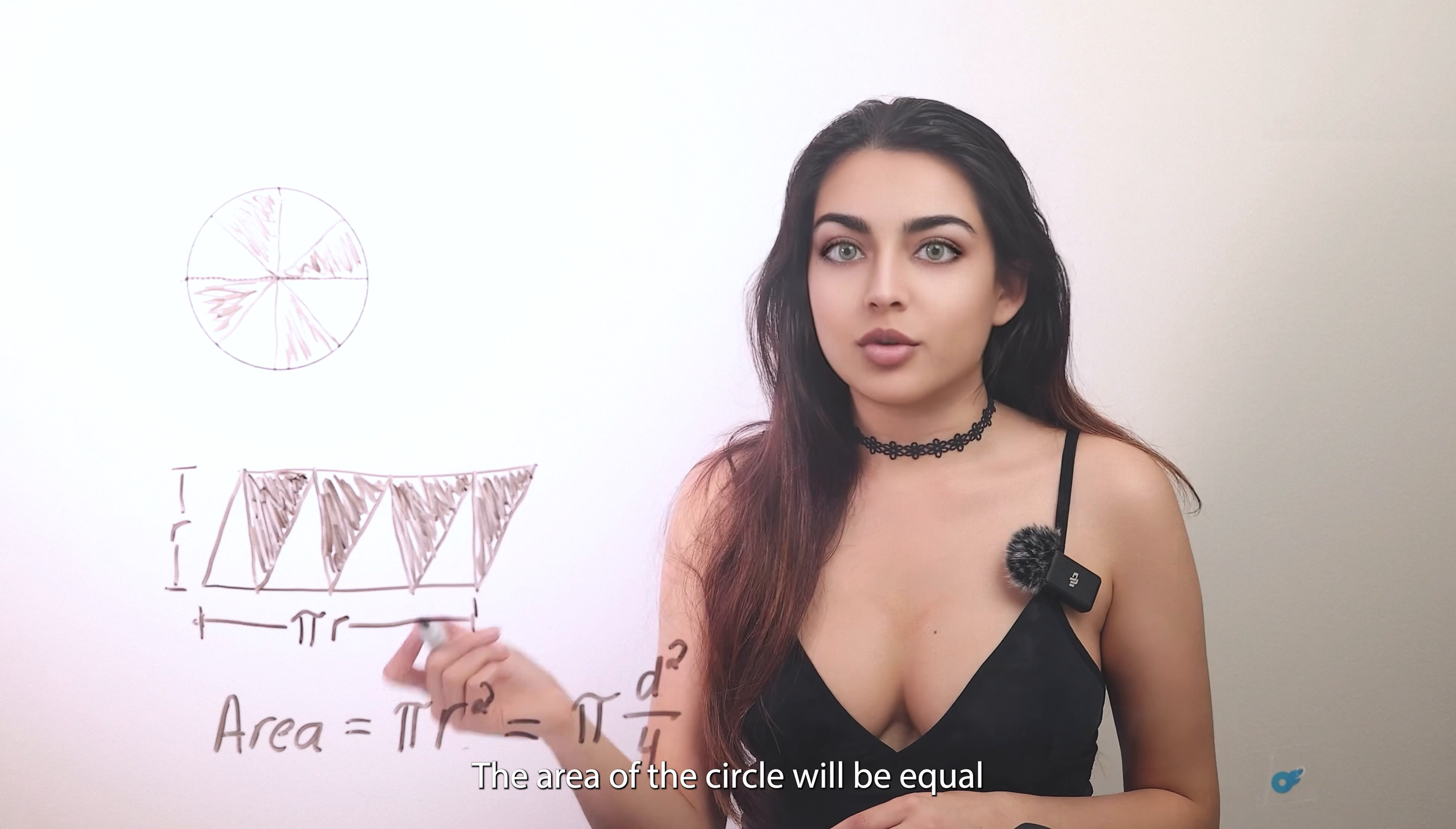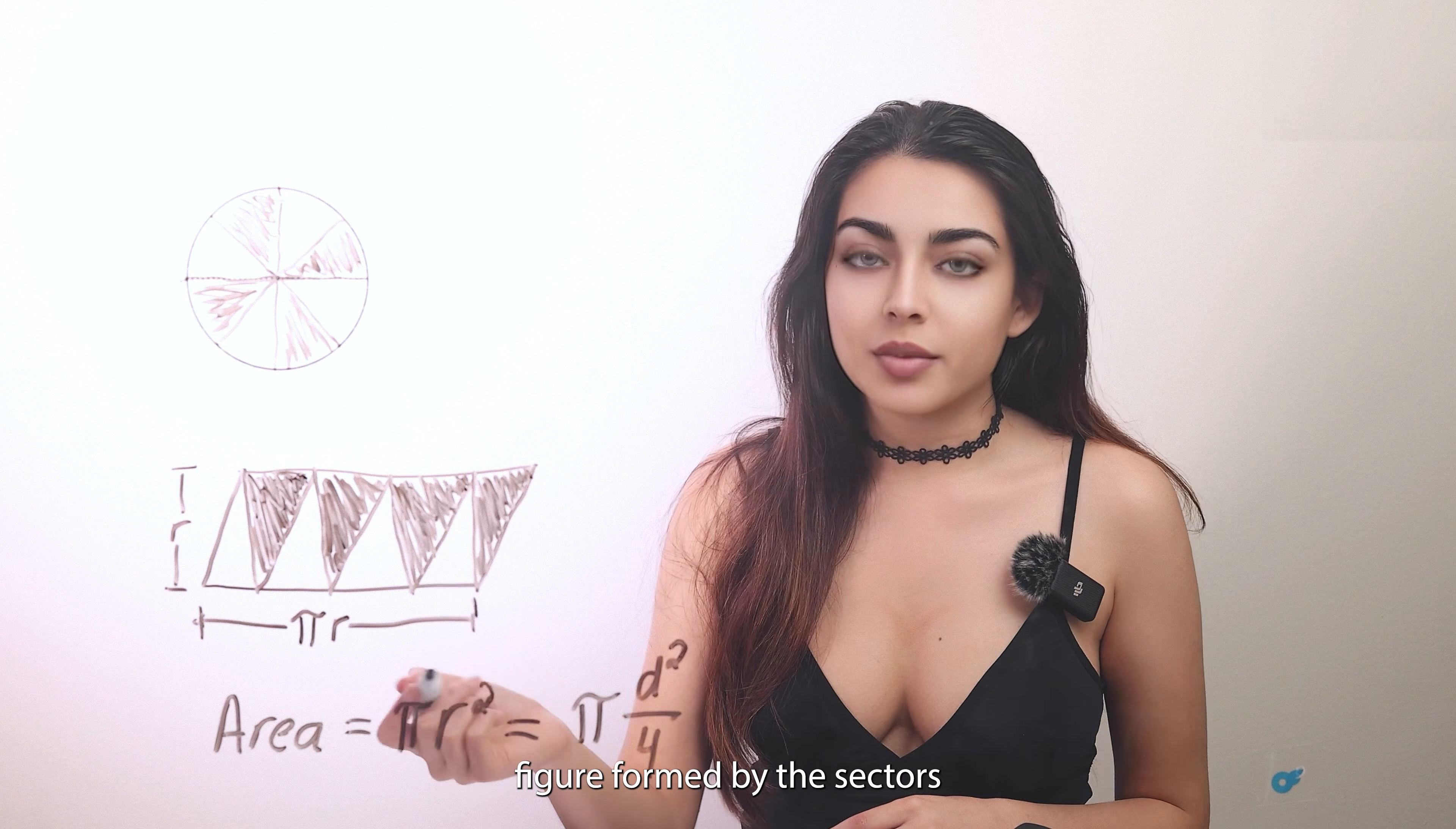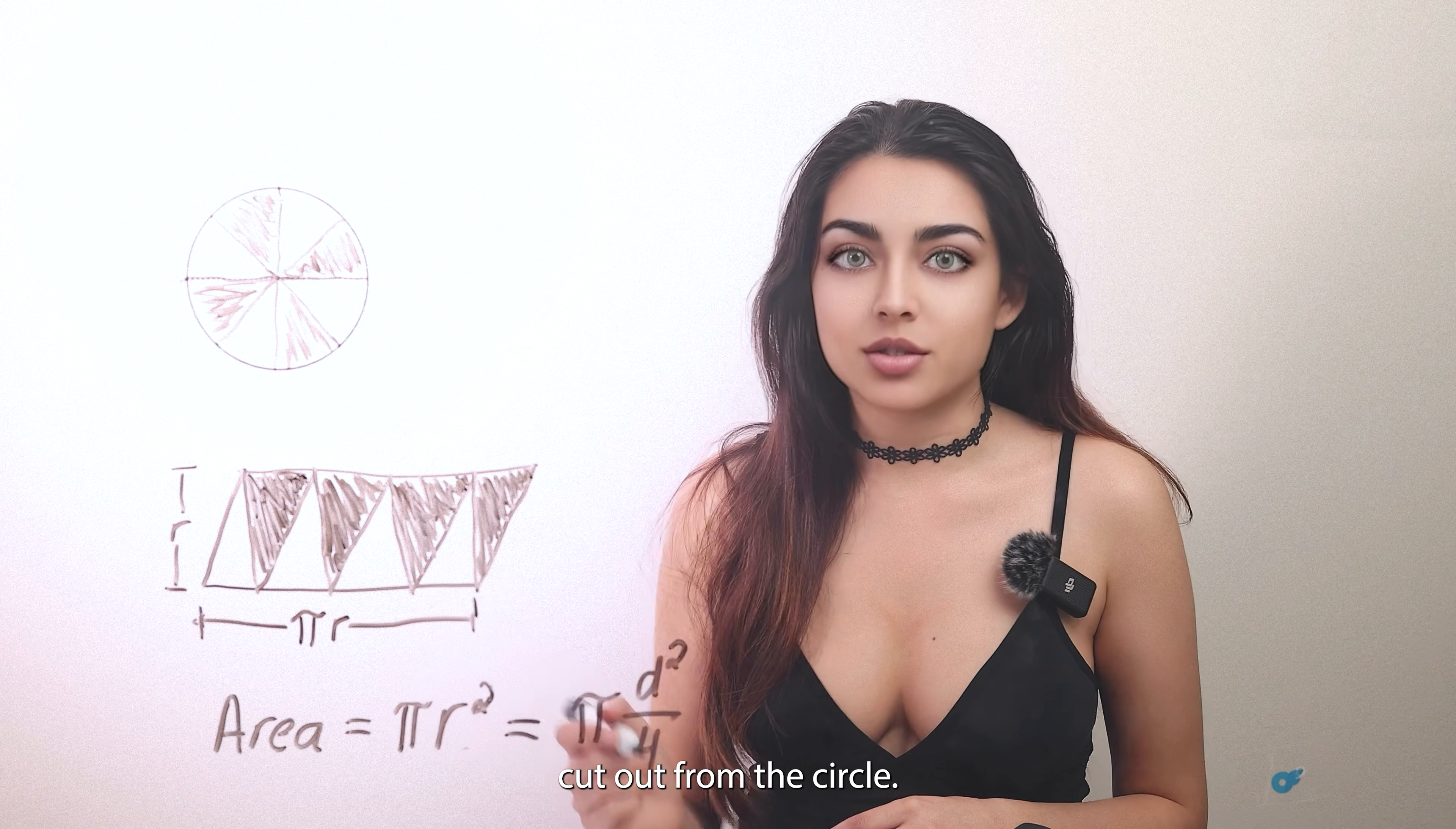The area of the circle will be equal to that of the parallelogram shaped figure formed by the sectors cut out from the circle.